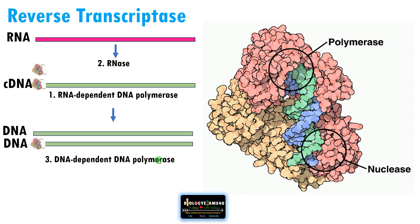So reverse transcriptase has three activities. First, during reverse transcription, it acts as RNA-dependent DNA polymerase. Then it cleaves out the RNA strand by its nuclease or RNase activity. The third activity is forming the second DNA strand by DNA-dependent DNA polymerase activity.